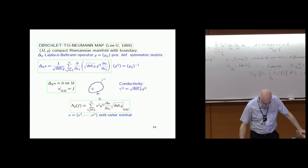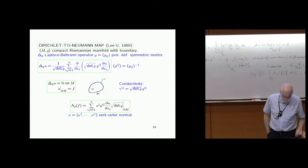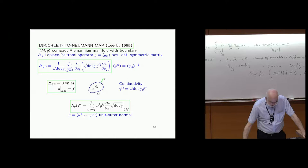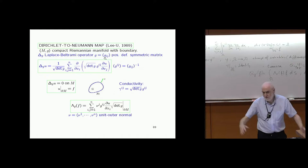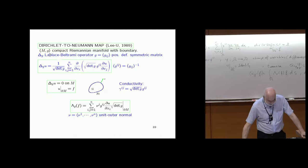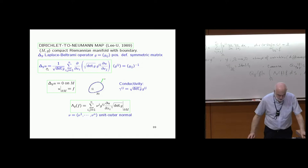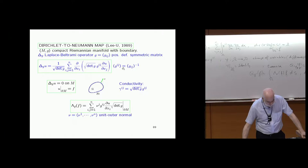How about higher dimensions? This is really a geometric problem. A positive definite symmetric matrix — with indices written lower — is called a Riemannian metric, which is a way to measure distances. You can take a compact Riemannian manifold with boundary; if you're not familiar with geometry, you can think of a domain in the plane. The Laplace-Beltrami operator, written in coordinates, plays a big role because of invariance.